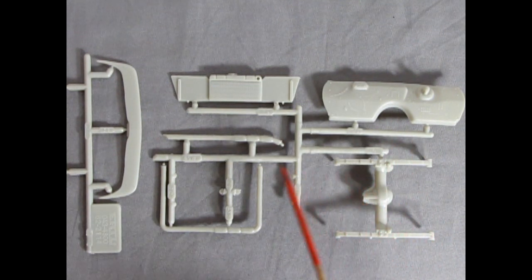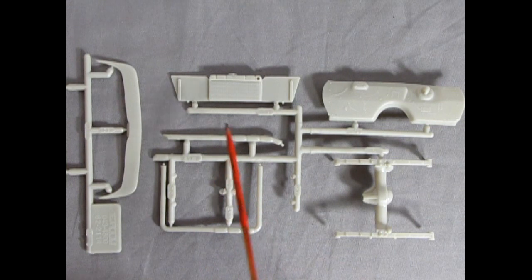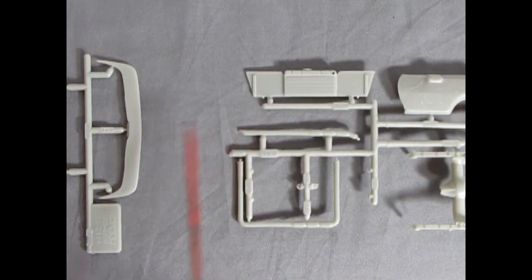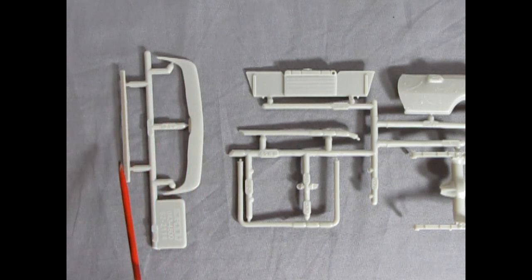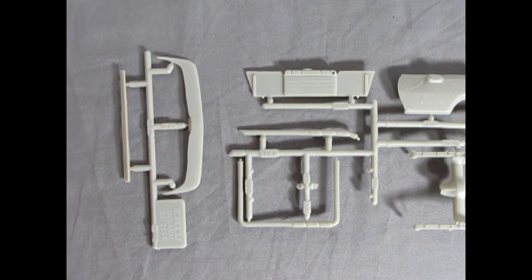Our next set of parts trees includes a firewall, rear springs and differential, the two-piece roll bar, the rad support and radiator. And if I move this over a little bit, you'll see our front splash pan and the stock trunk spoiler.